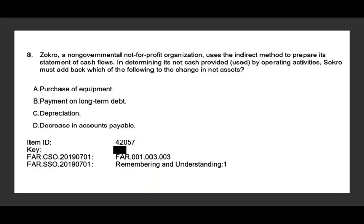Third question: Z, a non-governmental not-for-profit organization, uses the indirect method to prepare its statement of cash flows. In determining net cash provided by operating activity, Z must add back which of the following to the change in net assets? So we're looking at the operating activity and what we add back.